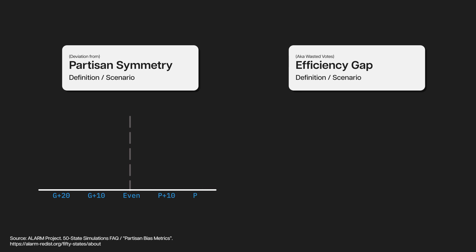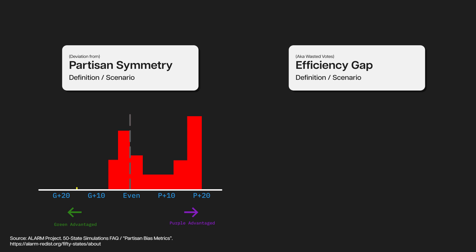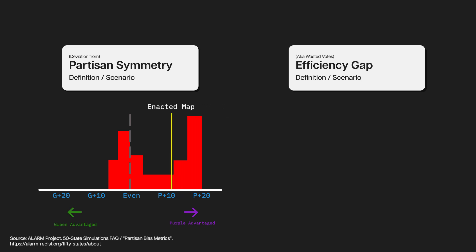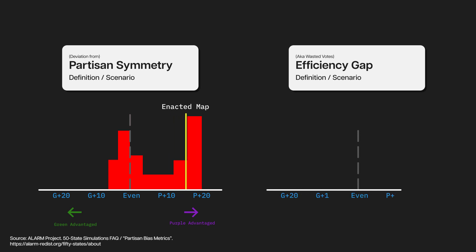Partisan symmetry is the basic idea that the proportion of the total vote should translate into a specific number of seats, regardless of party. So if the green party from our previous example won 60% of the vote and won three seats, we'd expect the purple party to have won three seats if they won 60% of the votes. If we can prove otherwise, there may be some breach or partisan bias. Therefore, we measure the deviation from perfect symmetry to represent who is favored under the enacted plans.